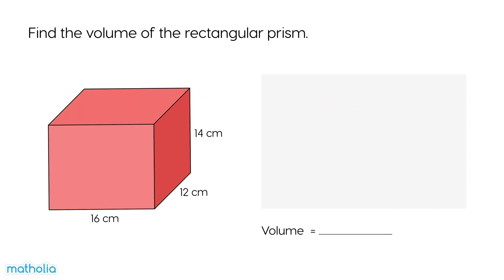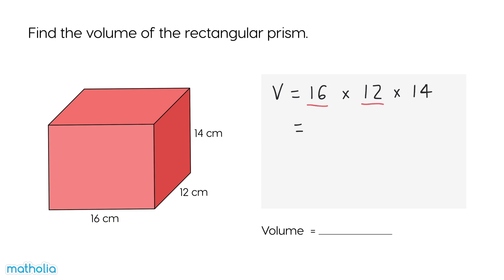Find the volume of the rectangular prism. We need to multiply the length by the width by the height. 16 times 12 is 192.